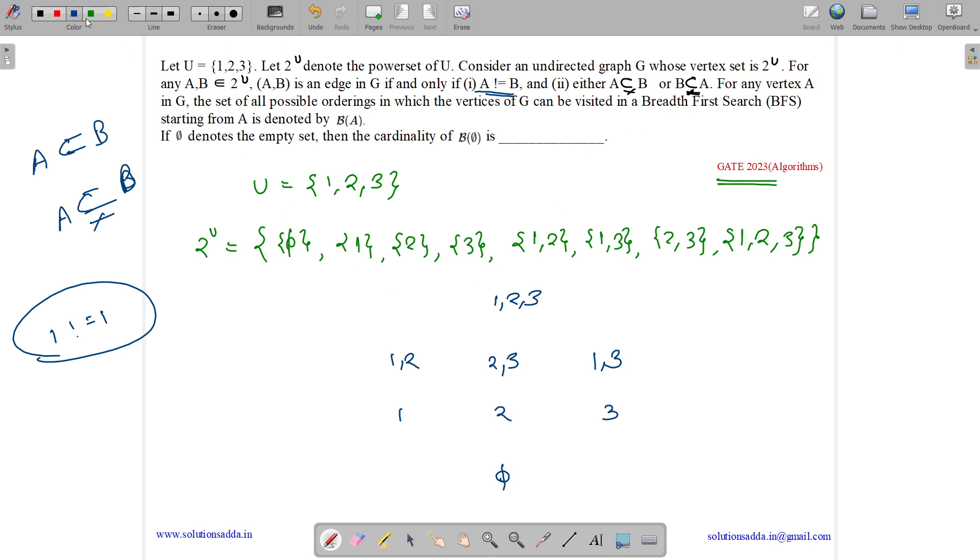So what edges will be there? Phi is a proper subset of every set, so we will have edge from phi to {1}, {2}, {3}, and {1,2,3}.